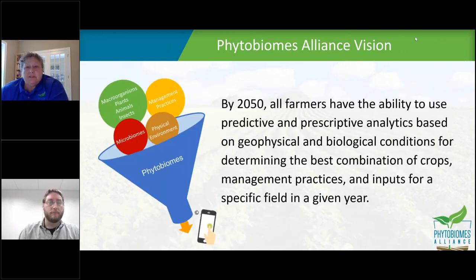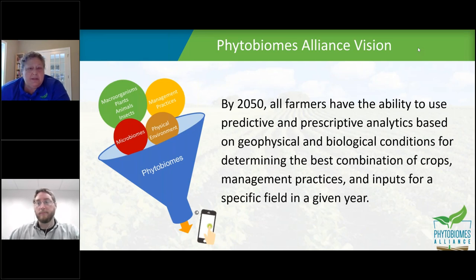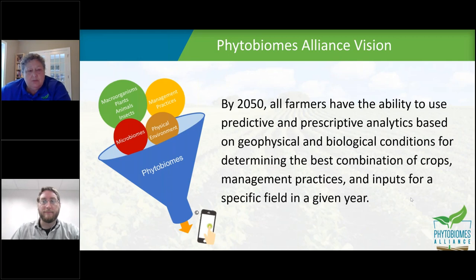Our vision is that by 2050, all farmers will have the ability to use predictive and prescriptive analytics based on geophysical and biological conditions for determining the best combination of crops, management practices, and inputs for a specific field in a given year — really looking towards a true digital agriculture that can work towards finding the most sustainable solution for any particular farming operation.